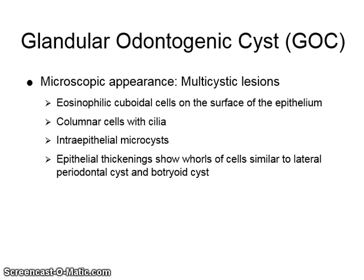The glandular odontogenic cyst is a relatively recently defined odontogenic cyst. It exhibits a distinctive microscopic appearance and they are usually multi-cystic lesions. Microscopic features include eosinophilic cuboidal cells on the surface of the epithelium, and columnar cells with cilia are seen elsewhere on the surface. Intraepithelial microcysts or duct-like spaces within the epithelium, and clear epithelial cells and mucous cells are also noted. Epithelial thickenings showing whorls of cells, similar to those seen in lateral periodontal cysts and botryoid cysts, are often also seen.